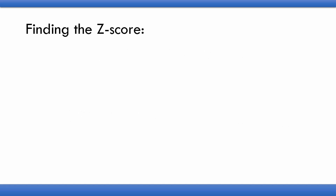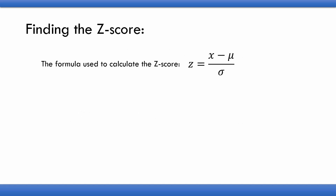Now considering the first step: finding the Z-score. To standardize the value x we use the formula z = (x − mu) / sigma, where sigma is the standard deviation. Using this formula we are going to find the Z-score for the corresponding x.